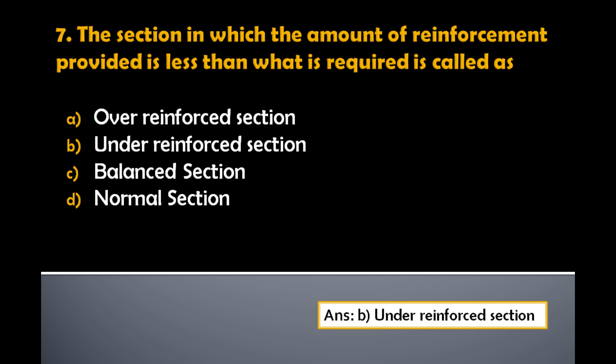The section in which the amount of reinforcement provided is less than what is required is called as: A) Under reinforced section, C) Balanced section, D) Normal section. The answer is: the section in which the amount of reinforcement provided is less than what is required is called as an under reinforced section.